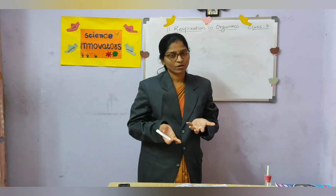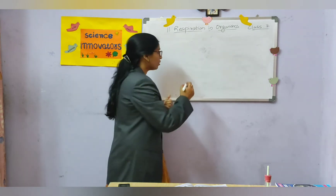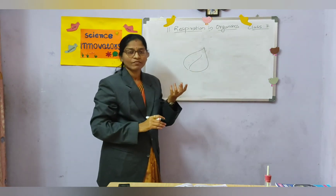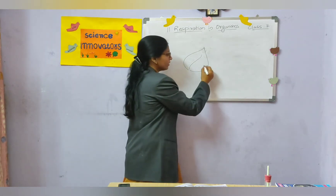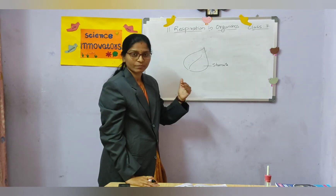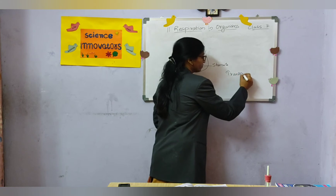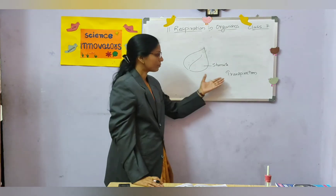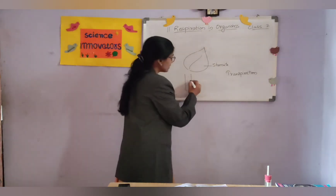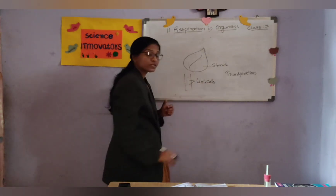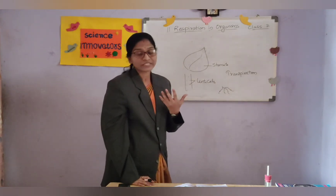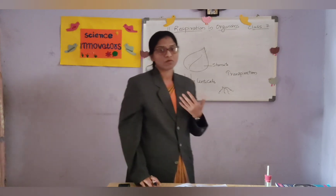Plants take in oxygen and leave out carbon dioxide through small pores on the leaf called stomata, which cannot be seen with the naked eye but are visible under a microscope. Gaseous exchange takes place in plants through stomata by the process of transpiration. On the stem, small pores called lenticels are present through which plants also respire. On the roots as well, small pores are present through which plants respire. In this manner, even plants also respire.